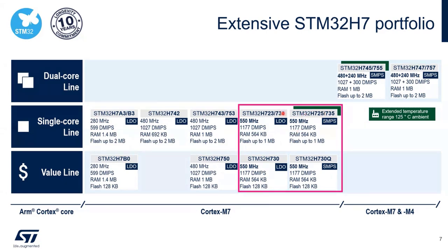You may also wonder about the difference between 2.3 and 2.5: one is with LDO and the other is with the SMPS option. The flash is up to 1 megabyte for what we call the access line — 2325, 3335. We also have a value line, which is always cost optimized.